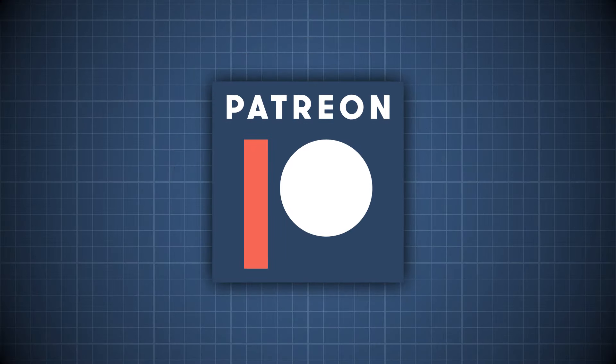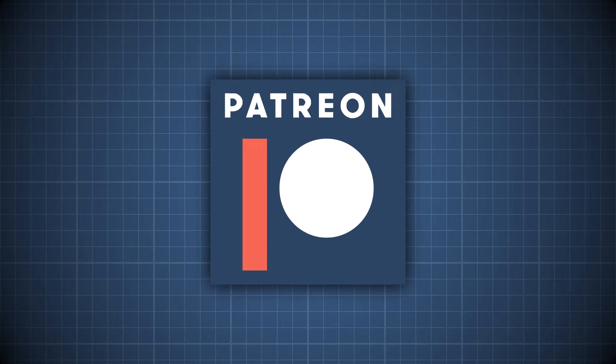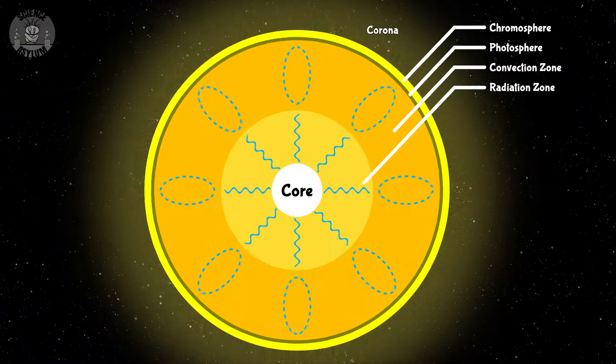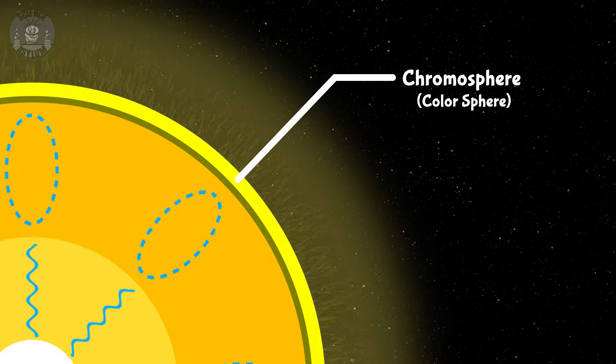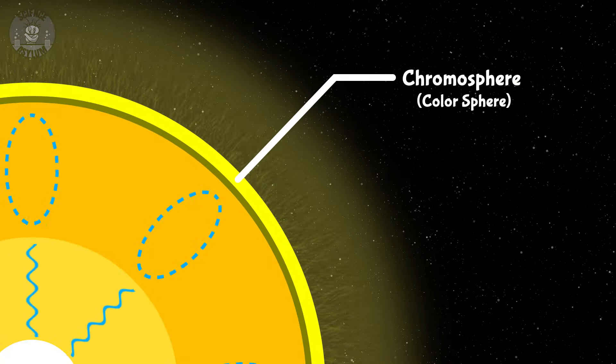This episode was made possible by generous supporters on Patreon. A star's color comes from one of its outermost layers, a layer called the Chromosphere, or Color Sphere.